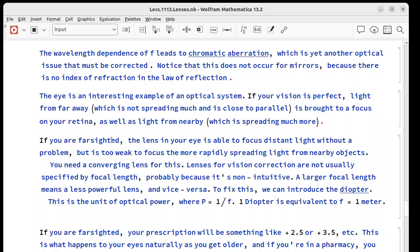The fact that our focal length depends on wavelength gives us something called chromatic aberration. That's something else that has to be corrected. We don't have this for mirrors because there's no index of refraction involved in the law of reflection.